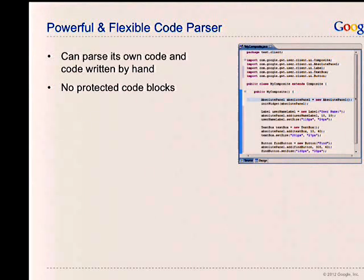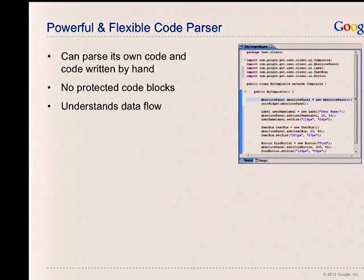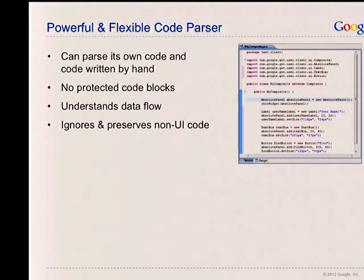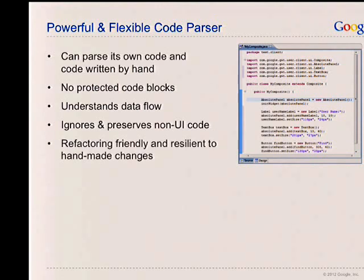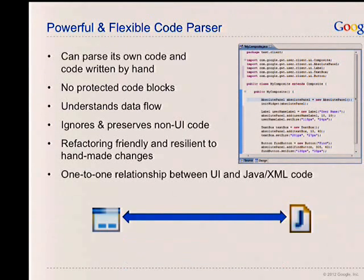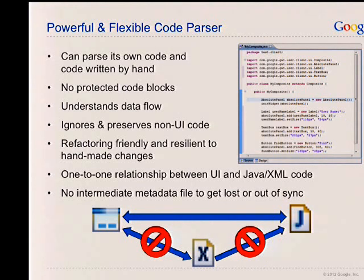There are no protected code blocks, which you might have run across in GUI builders in the past — so you can add your own code anywhere you want. The tool understands data flow, so you can refactor your code. If you want to break the UI method up into multiple pieces, you can do that. It ignores and preserves any non-UI code. It's very refactoring-friendly and resilient to handmade changes. There is a one-to-one relationship between what's in the Java or XML code and the UI — no intermediate metadata file that might get out of sync.